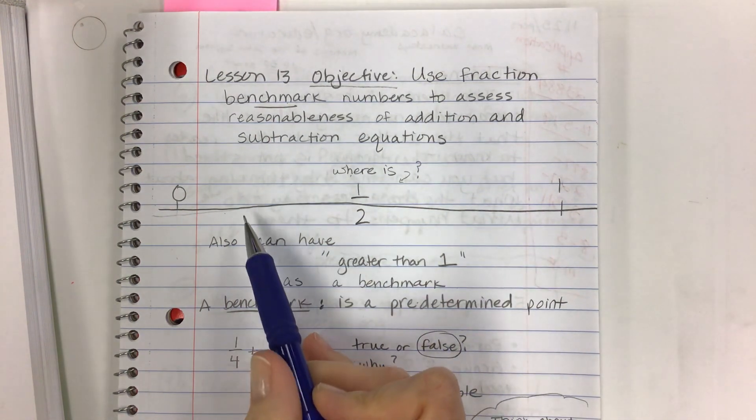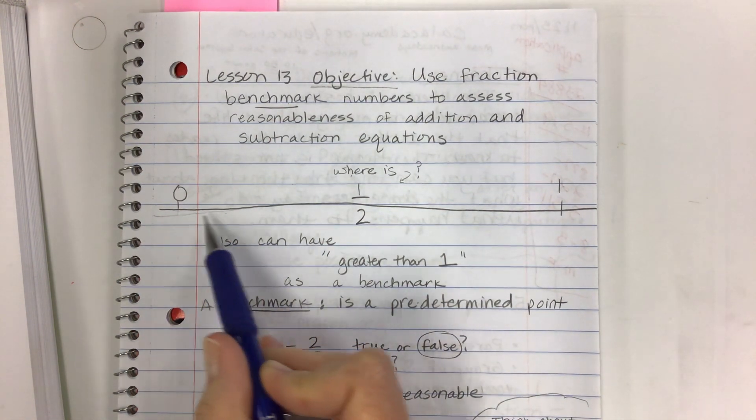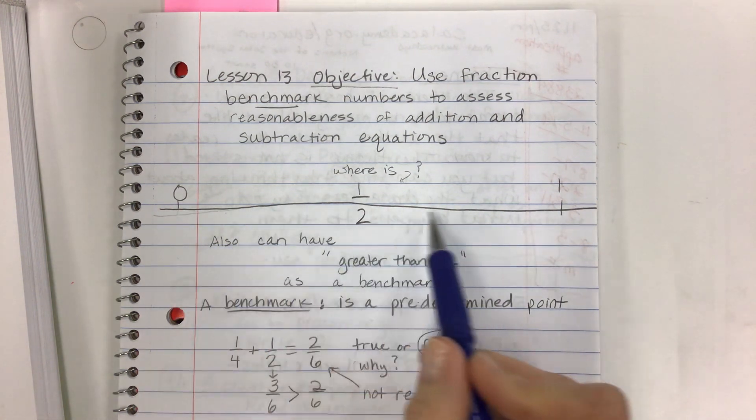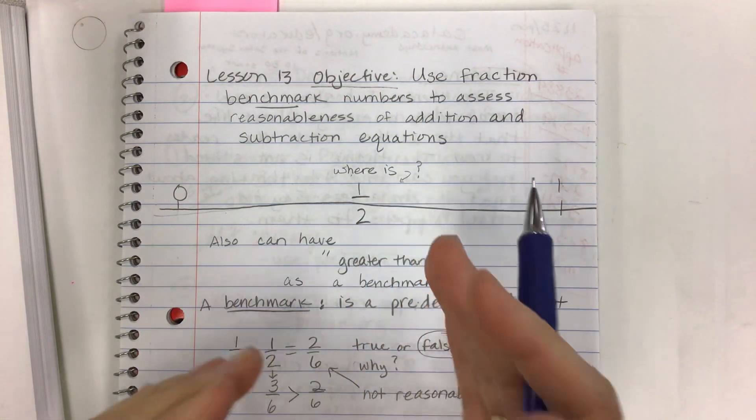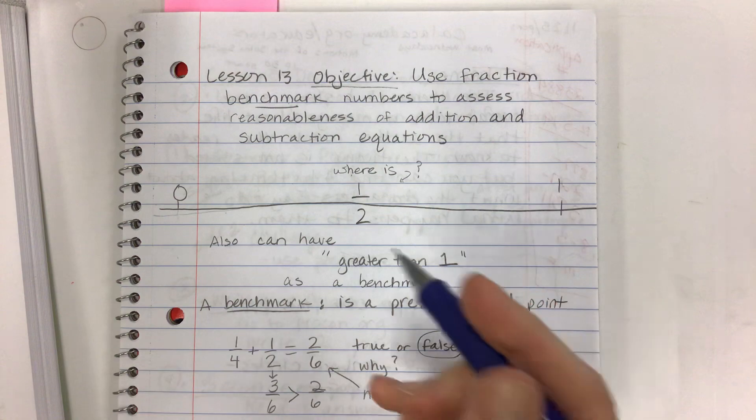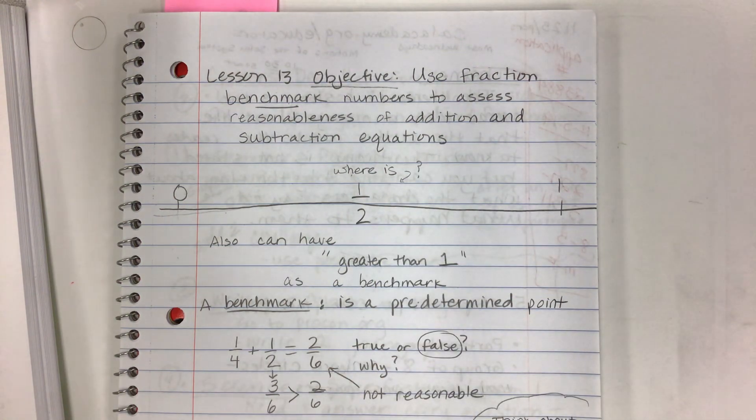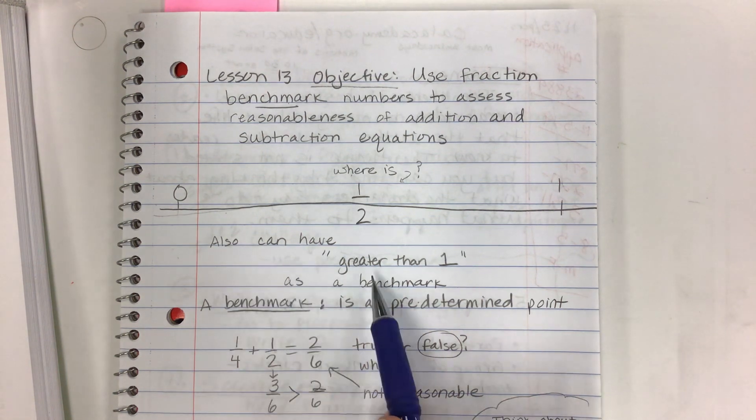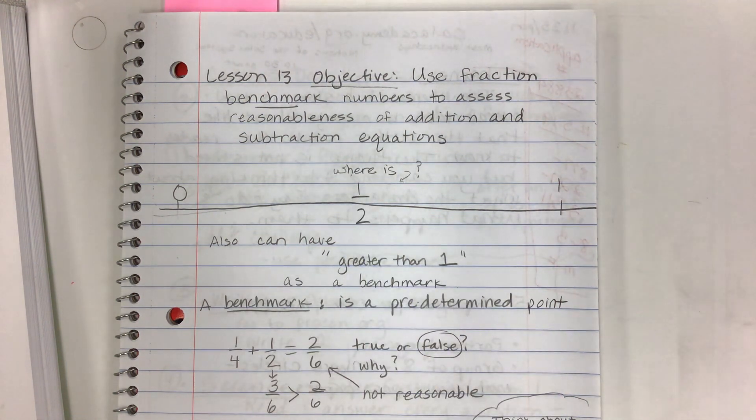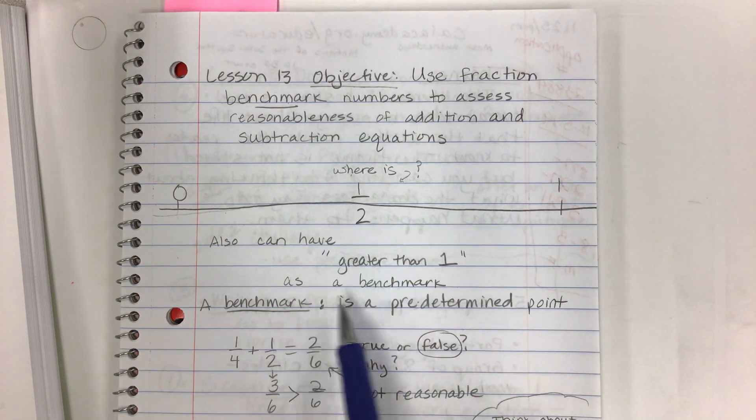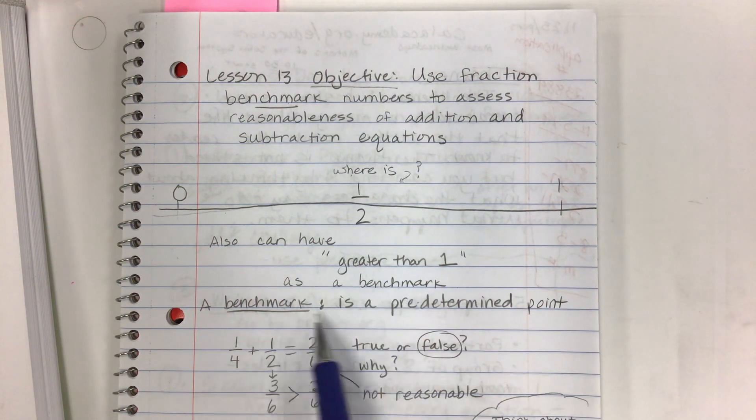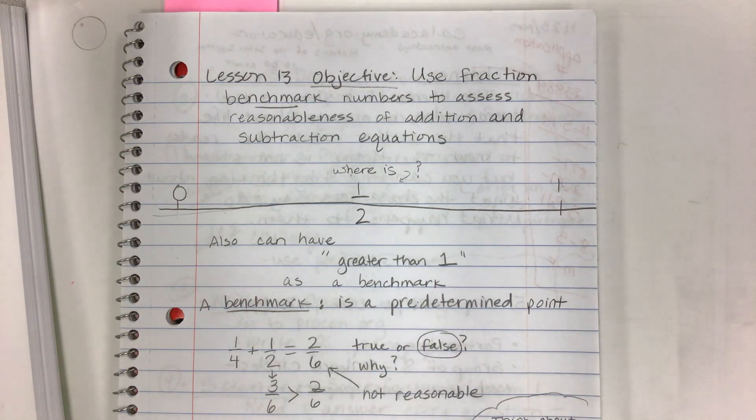Probably the biggest helpful tool for today is to have a number line and to just think about where each fraction would fall. When in doubt I'll always say we'll just figure it out and see where you are and see how that plays into your reasoning. Also we'll have greater than one instead of greater than a half or less than a half. You can have any number as a benchmark. It's really just kind of what you're shooting for, this predetermined point.